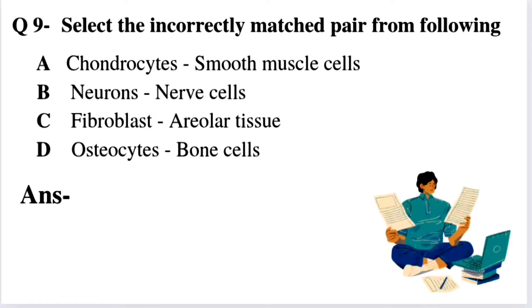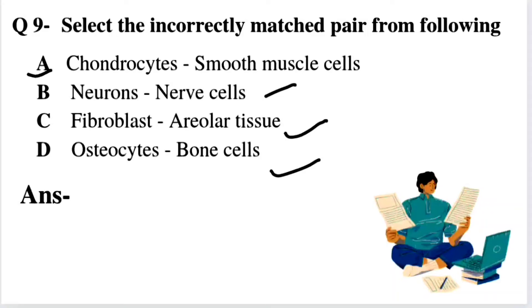Question number 9: Select the incorrectly matched pair. Option A: Chondrocytes — Smooth Muscle Cells. Option B: Neurons — Nerve Cells. Option C: Fibroblast — Areolar Tissue. Option D: Osteocytes — Bone Cells. Options B, C, and D are correctly matched. Osteocytes are bone cells, fibroblasts are found in areolar tissue, and neurons are nerve cells. However, chondrocytes are cells found in cartilage — a strong, flexible connective tissue that protects joints and bones — not smooth muscle cells. So Option A is incorrectly matched and is the right answer.